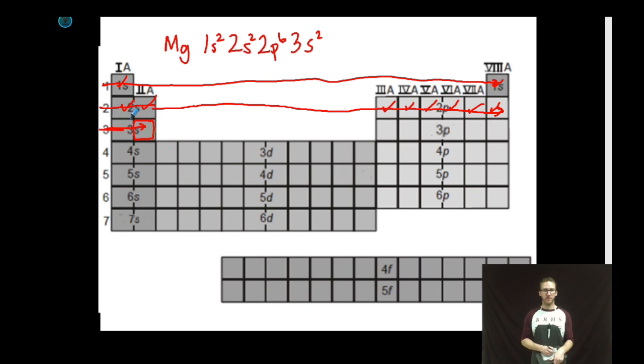3s2. We've reached magnesium. Let's check. 2 plus 2 plus 6 plus 2. 12 total electrons. To think about this configuration, I've got two electrons in the first main energy level. I've got eight electrons in the second main energy level, two in the 2s, six in the 2p. Finally, two electrons in the third main energy level, in that s-sublevel. My valence level for magnesium, third main energy level.